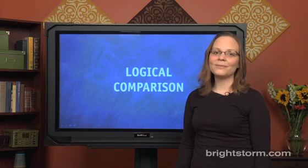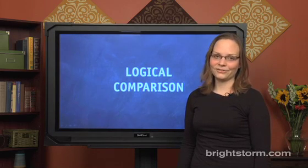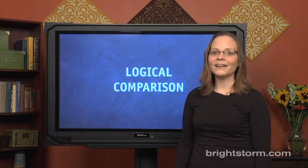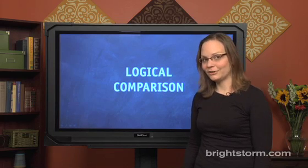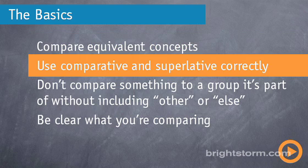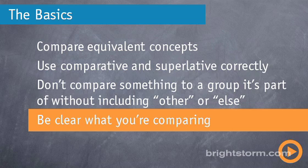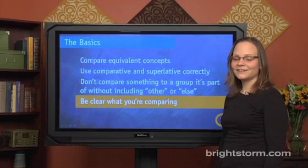In this episode we're going to talk about logical comparison, which happens all throughout the SAT writing section on all question types. There are four rules: first, compare equivalent concepts; second, use comparative and superlative forms properly; third, don't compare something to a group it's part of without including the words 'other' or 'else'; and lastly, be clear what you're comparing.